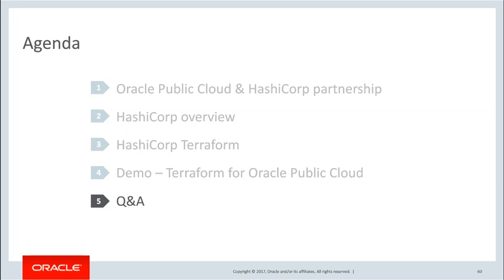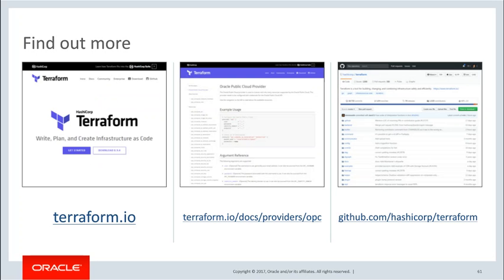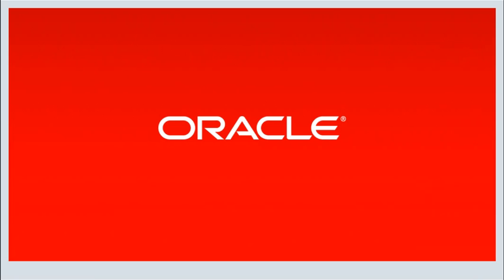Thank you very much, Jake. As we address any final questions in the Q&A chat, I want to highlight that you can find more information by going to the main Terraform website at terraform.io, where you can download the latest distribution that includes full support for the Oracle Public Cloud Oracle Compute Cloud provider. There's also full documentation on how to use the Oracle provider available on that same site. For any questions and issues around using the provider, you can submit those through the HashiCorp Terraform GitHub repository. Thank you very much to everybody for joining the webinar today, and thank you to Berzdin and Jake for providing the overview and introduction to using Terraform with the Oracle Public Cloud.